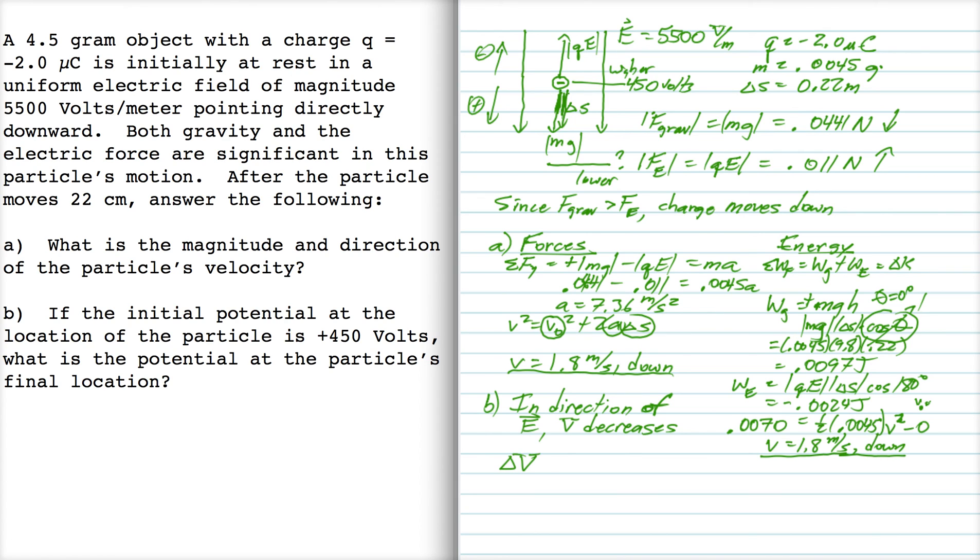So delta V, in this case, the change in voltage, I can just use ED because it's a uniform field. And in this case, it's minus ED because our potential is going to be decreasing. So it's minus 5500 times 0.22 meters, which is minus 1210.